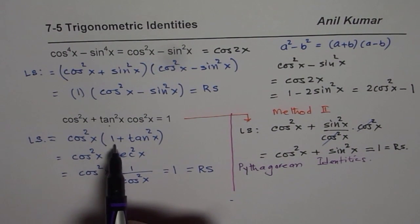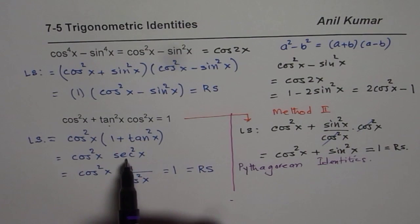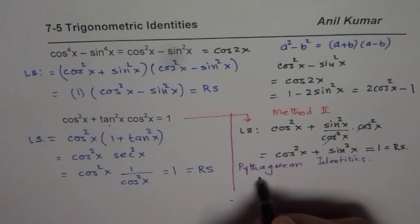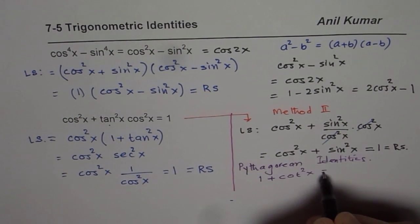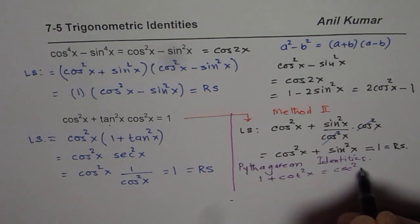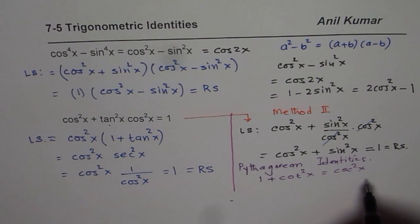The other one we used here, one plus tan square x is secant square x. And one more you should remember is one plus cot square x is equals to cosecant square x. So these are the three identities.